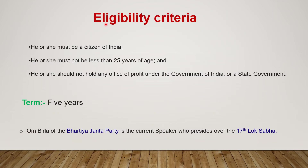We should also know about the eligibility criteria for becoming a Speaker of Lok Sabha, as this question may come for a three-mark question. He or she must be a citizen of India, must not be less than 25 years of age, and should not hold any office of profit under the government of India or a state government. The term of the Speaker of Lok Sabha is five years. Om Birla of the Bharatiya Janata Party is the current Speaker who presides over the 17th Lok Sabha.